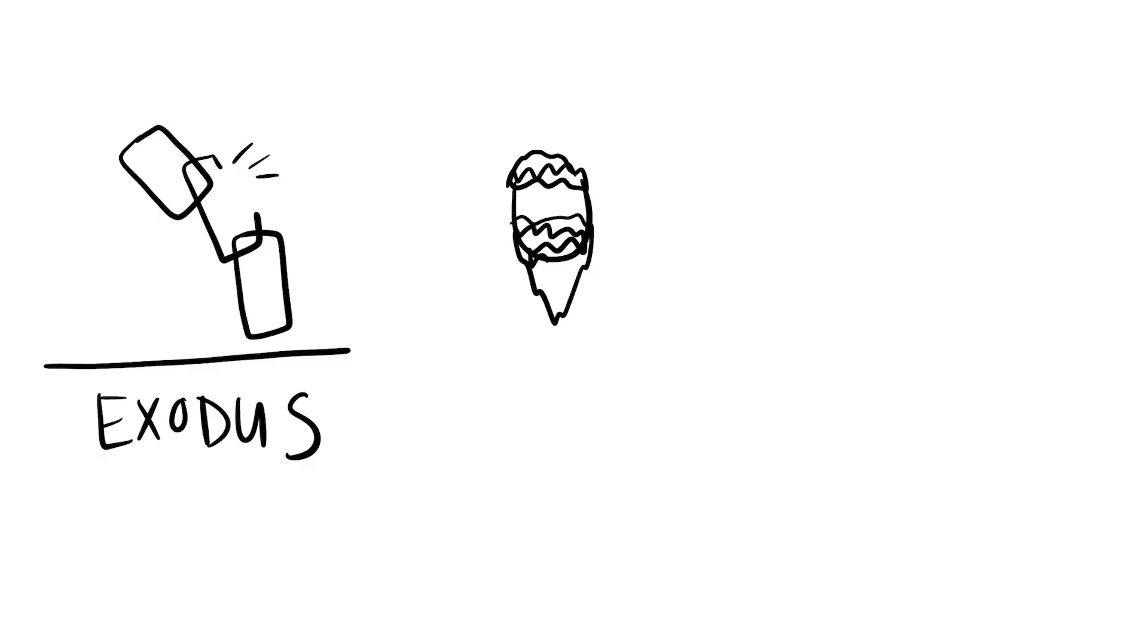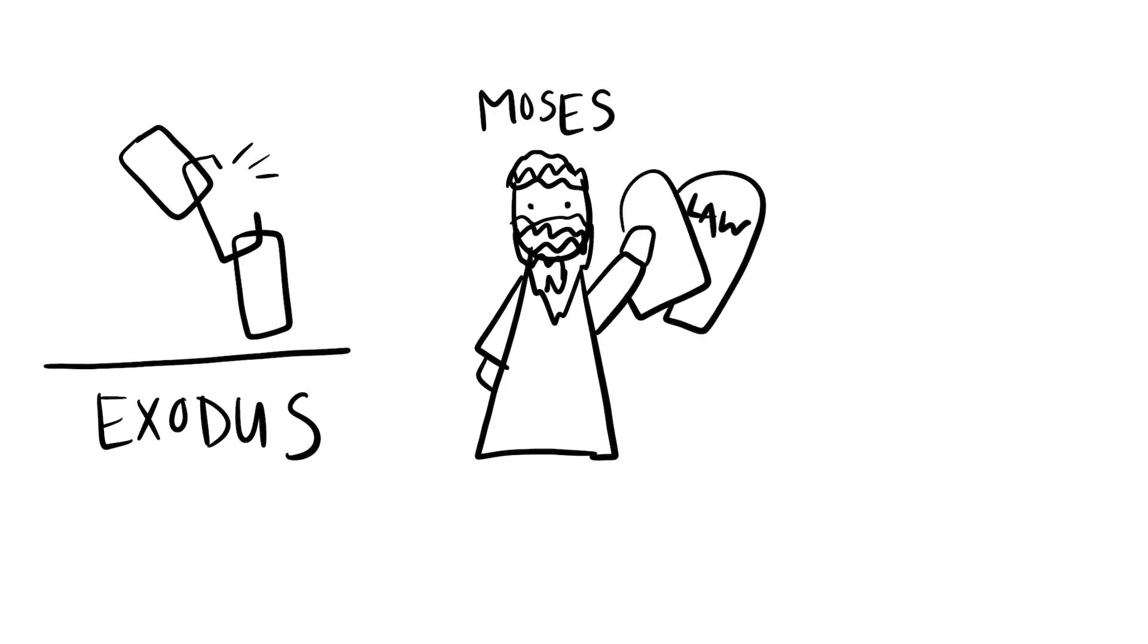Then there was the exodus era when God used Moses to deliver his people from slavery in Egypt and give them the law. But people are not perfect and were unable to follow the law perfectly. But one day God would send someone who would, and that person is Jesus.